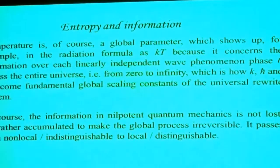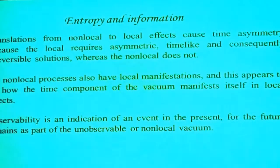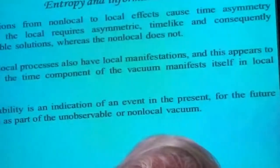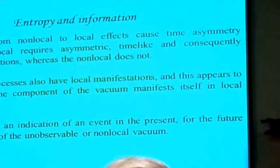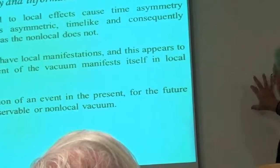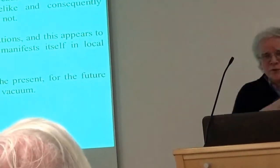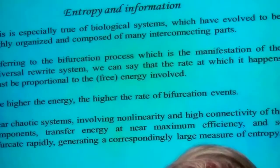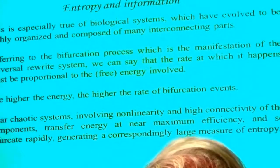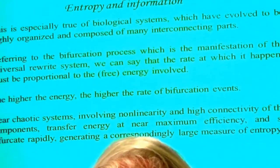Self-organization allows us to take the loss as a measure not simply of the loss, but of the information which enables the self-organization to proceed. We can treat the self-organization as a complete binary orbital measure. The measure of information transfer and entropy increase is determined by the level the alphabet reached. Translations from local to non-local to local effects are called time asymmetry, because the local requires asymmetric time-like constants, yet the non-local doesn't require time asymmetry. But you can't have a non-local process without a local one, so there's always a time component.